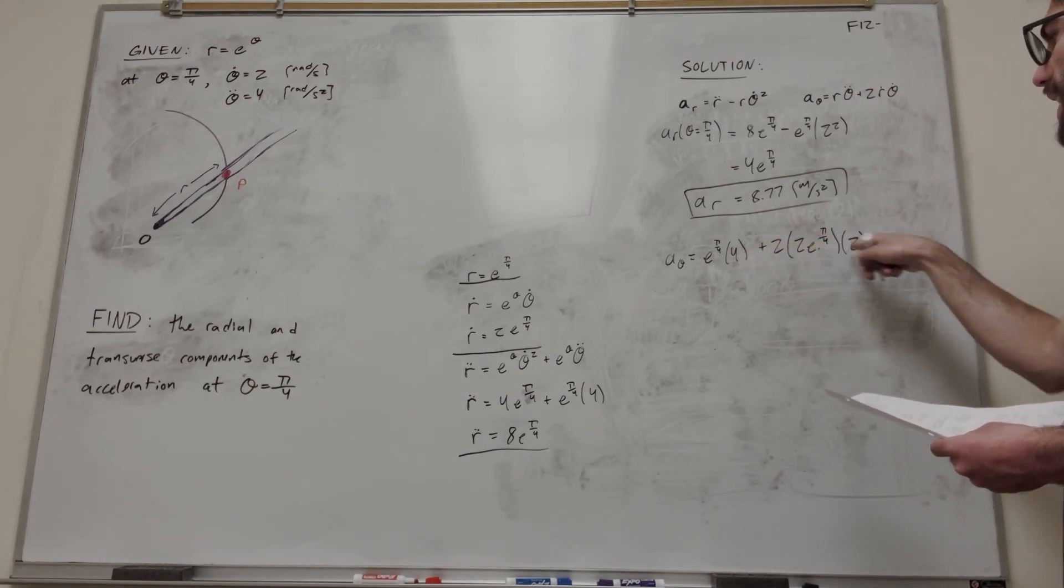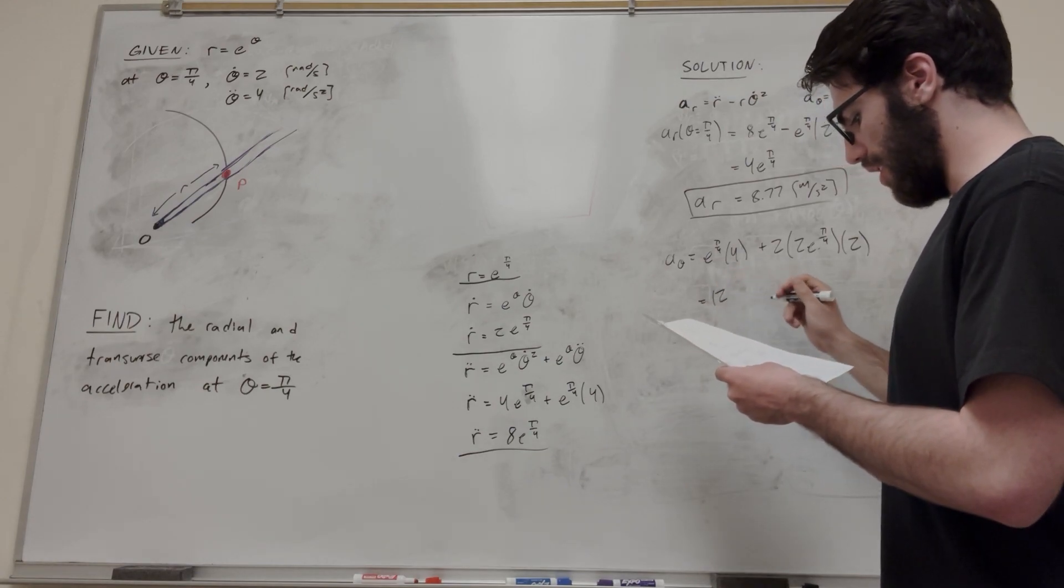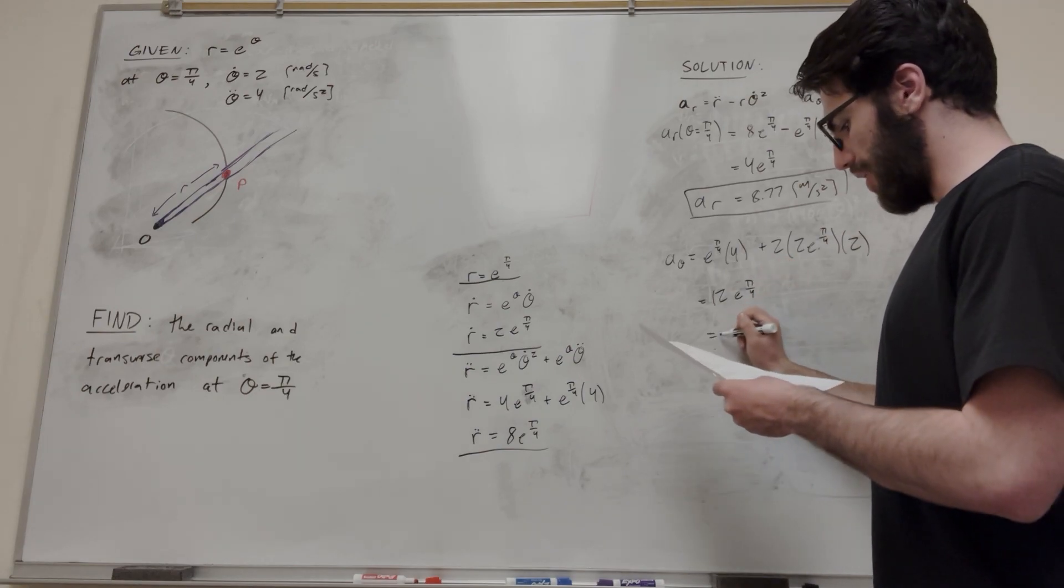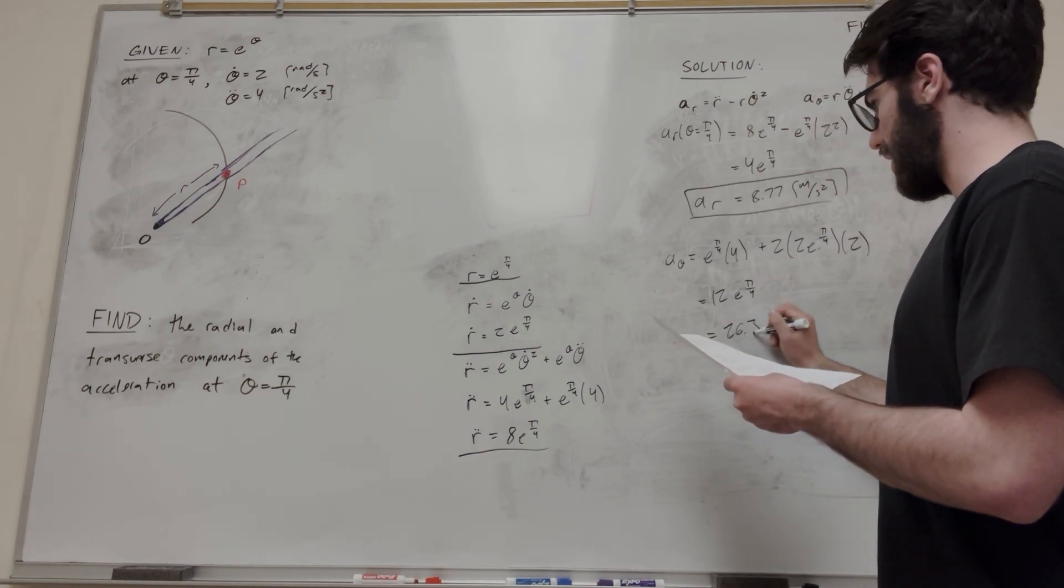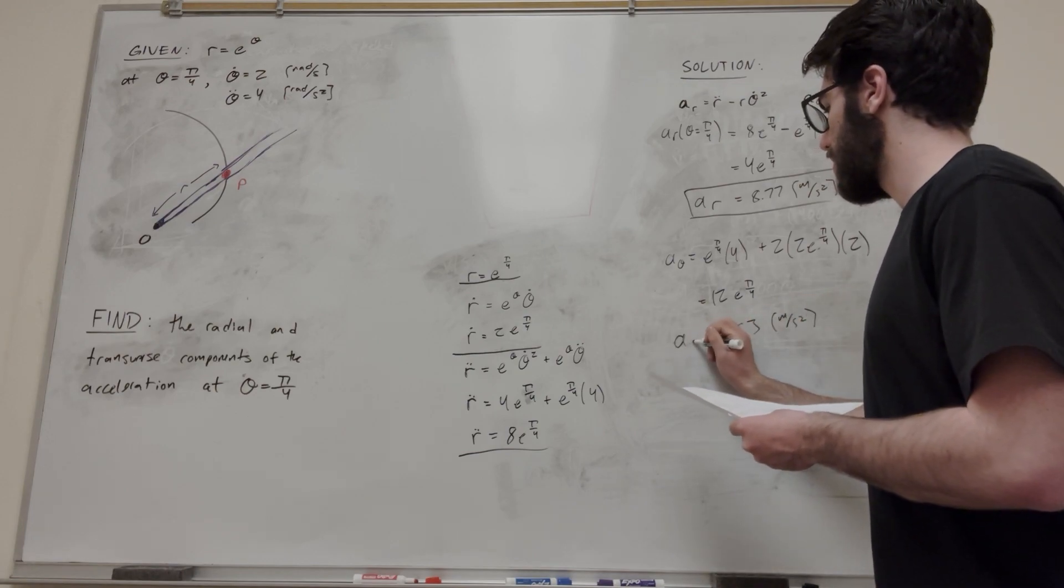All right, so we have 4 plus 8, so we're going to have 12. And this can become 12 e to the pi over 4. And then if you calculate that, you get 26.3 meters per second squared for the radial component of the acceleration.